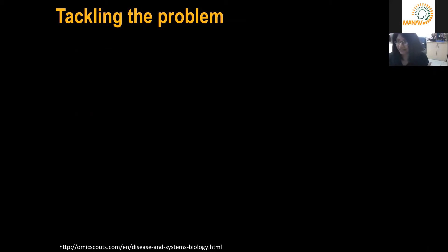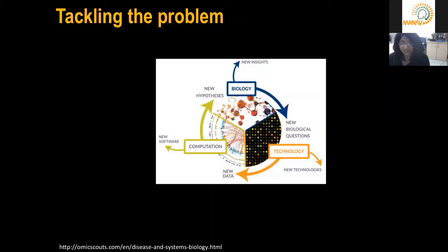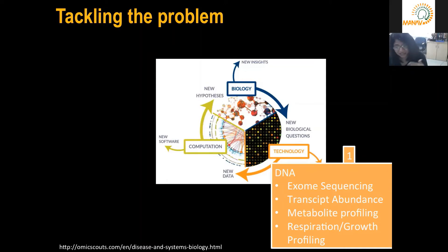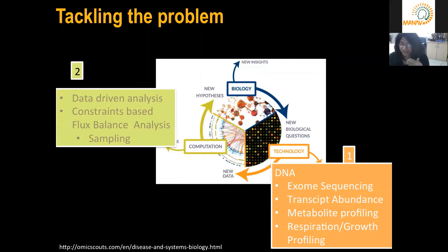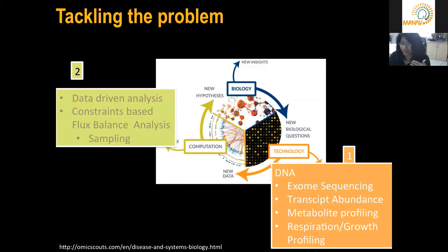Resistance to Temozolomide developed very quickly — it was introduced around 2005, and by 2009 resistance was already emerging. This underscores the urgent need to develop alternate therapies and therapeutic strategies towards glioblastoma. With this background of many concepts, I will now discuss the research recently accepted in a Nature partner journal, NPJ Systems Biology and Applications, on how technology and computation can help delineate varying phenotypes of glioblastoma cells and understand emergent properties through integration of heterogeneous data types.